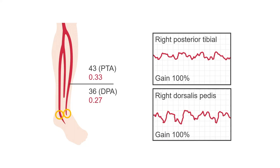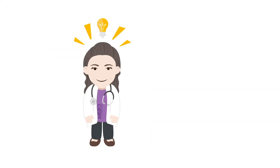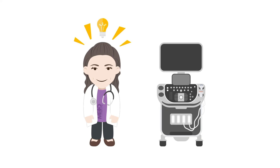Compare this patient's ABI test to the duplex. The damped monophasic ankle waveforms and abnormal indices suggest stenosis, but it doesn't give a location. The duplex confirms the blockage location is in the popliteal artery.